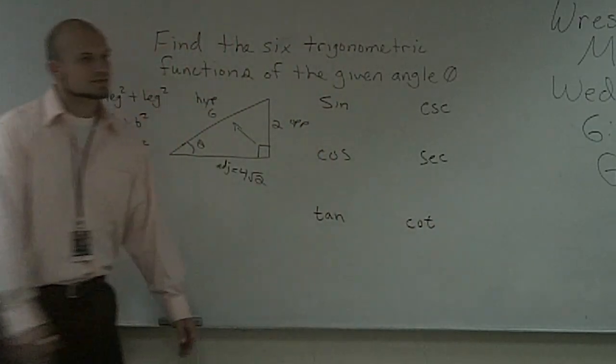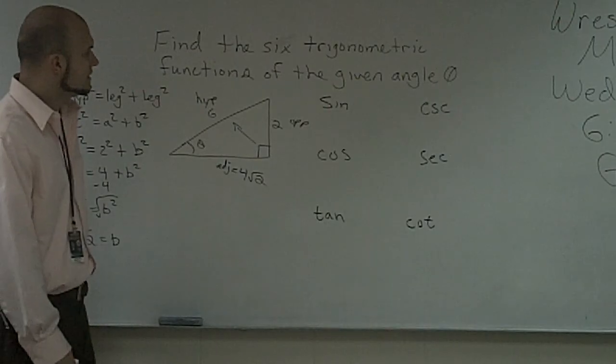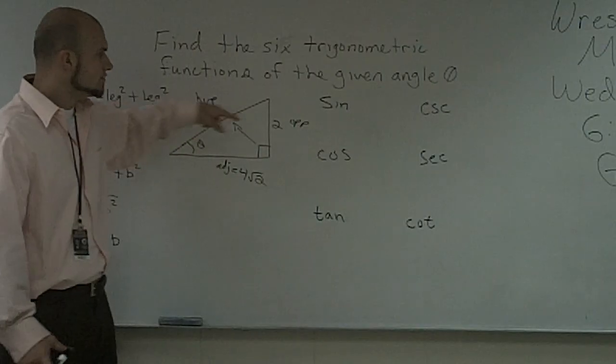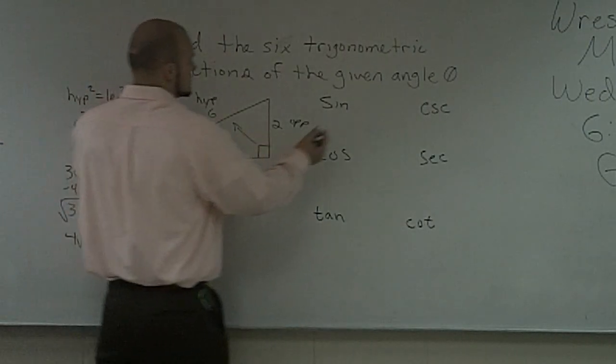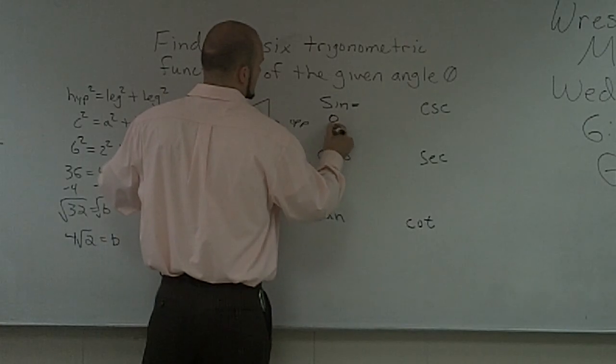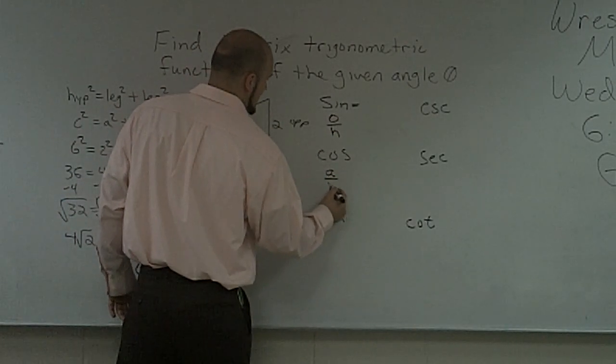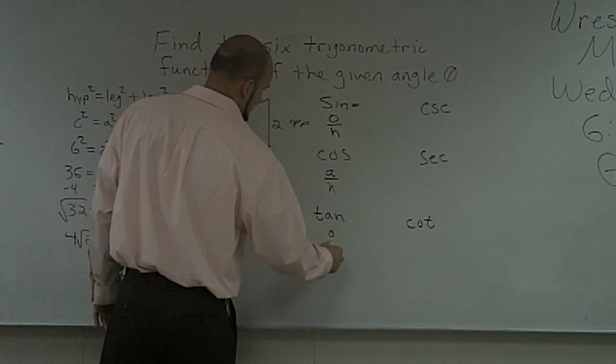Now, another thing you guys might want to remember is my sine is always going to be my opposite when dealing with the triangle, is going to be my opposite over my hypotenuse. Cosine is adjacent over hypotenuse. And then tangent is going to be opposite over adjacent.